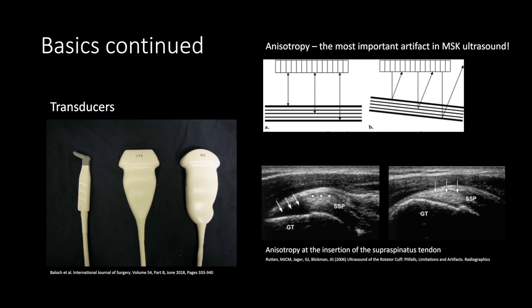Anisotropy is probably the most important artifact in MSK ultrasound. Normally, tendons and ligaments have a parallel arrangement. When there is some derangement, such as a tear, the orientation of the fibers is lost. For MSK ultrasound, it is important to make sure the probe is pointing perpendicular so the sound beams are hitting the structure of interest at a 90-degree angle for optimal reflection. Even small deviations in angulation can make it seem like there's a tear when there isn't. The bottom right shows an example of anisotropy at the insertion of the supraspinatus tendon.